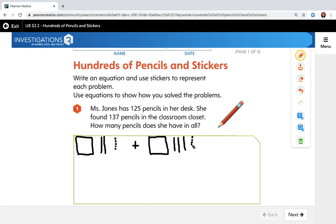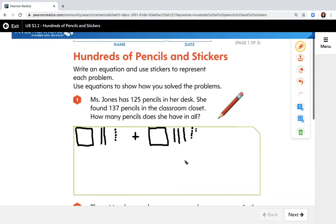So that's 3, 4, 5, 6, 7. Okay. So how many pencils does she have in all? So I know that this is 100 and this is 20 and this is 5 and I know that this is 100 and this is 30 and this is 7.